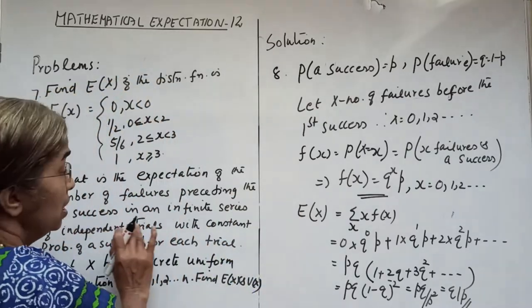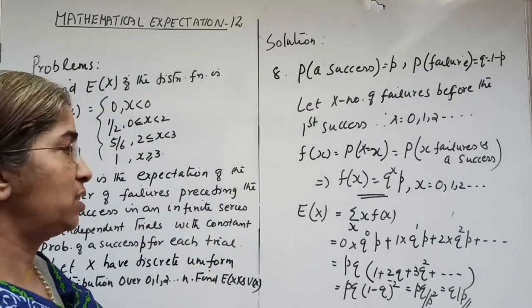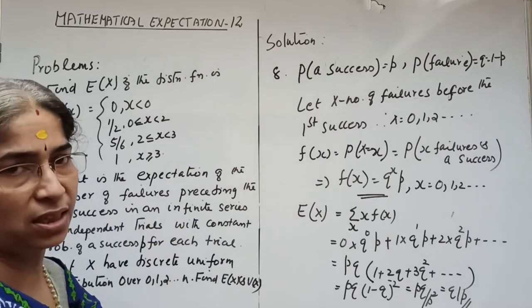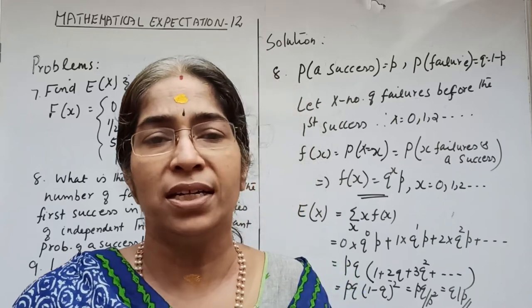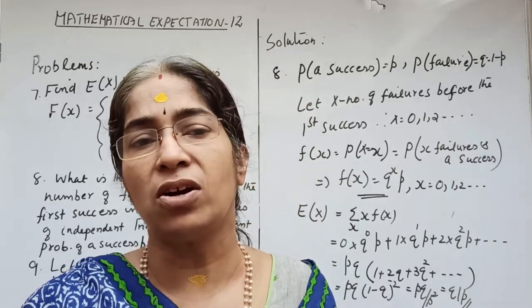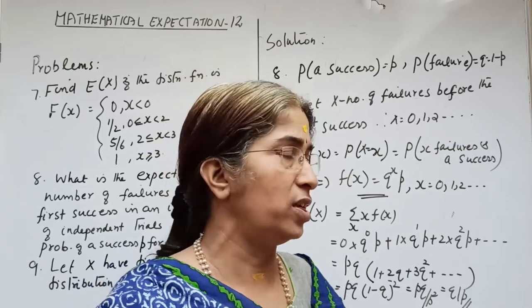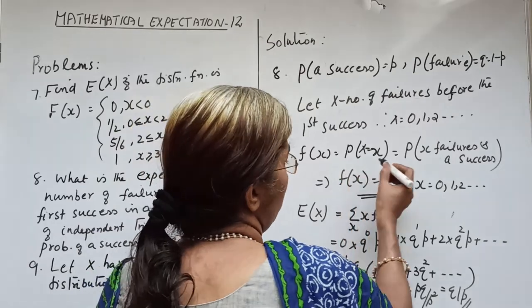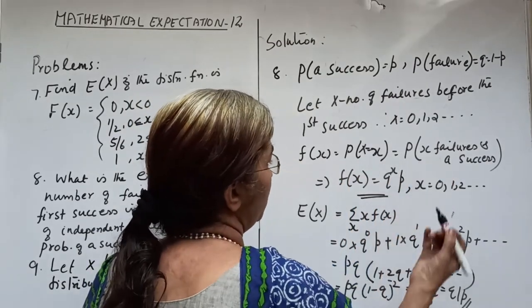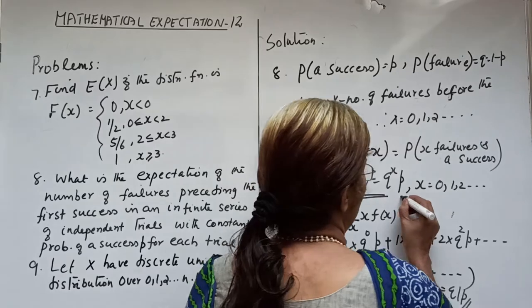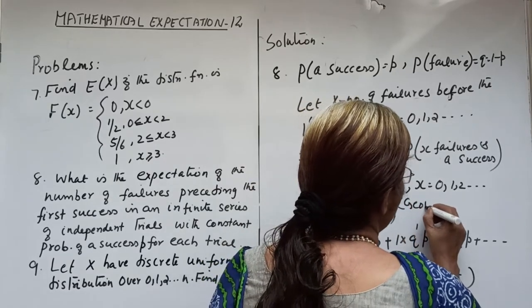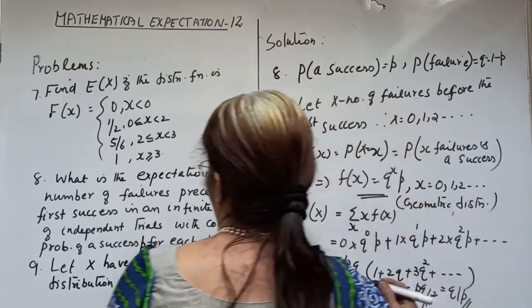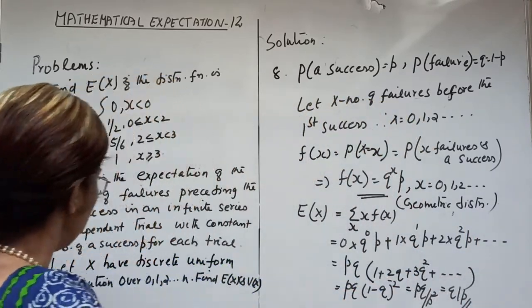This is the geometric distribution — the number of failures preceding the first success in an infinite series of independent trials with constant probability of success P — giving f(X) = Q^X · P, with expectation Q/P.